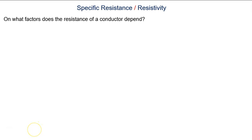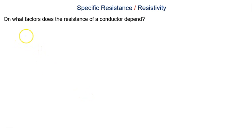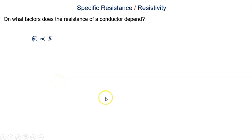We will discuss the factors on which the resistance of a conductor depends. Resistance of a conductor depends on the length of the conductor. R is proportional to L — more the length, more the resistance. If length will increase, resistance will also increase.